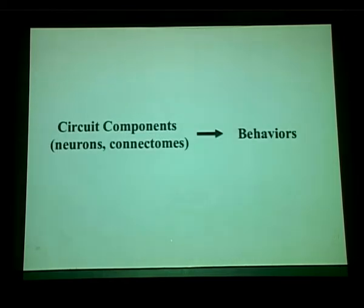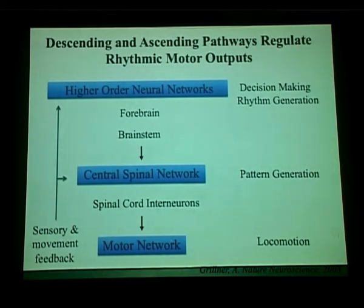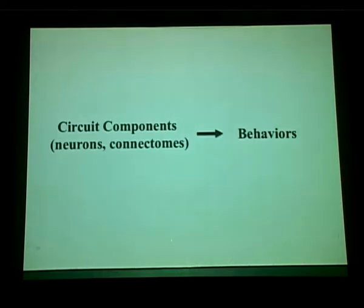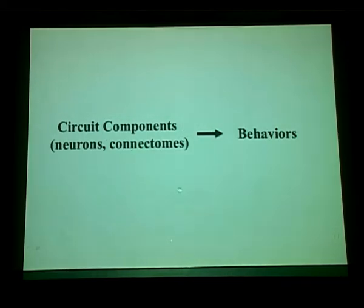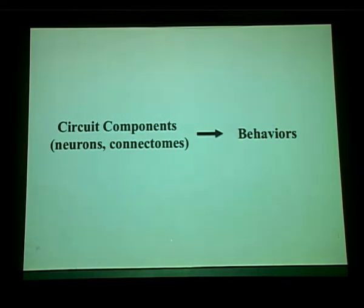Is it possible to generate more precise mechanistic or cellular understanding of how communication between different layers of the network allows the nervous system to generate coordinated locomotion? In recent years there has been a drive to understand circuits at a detailed cellular or even connectome level. This is exactly the question raised in the previous talk. Using behavior genetics in C. elegans, with 302 neurons total and less than a third contributing to motor control, we can gain cellular and molecular insights.